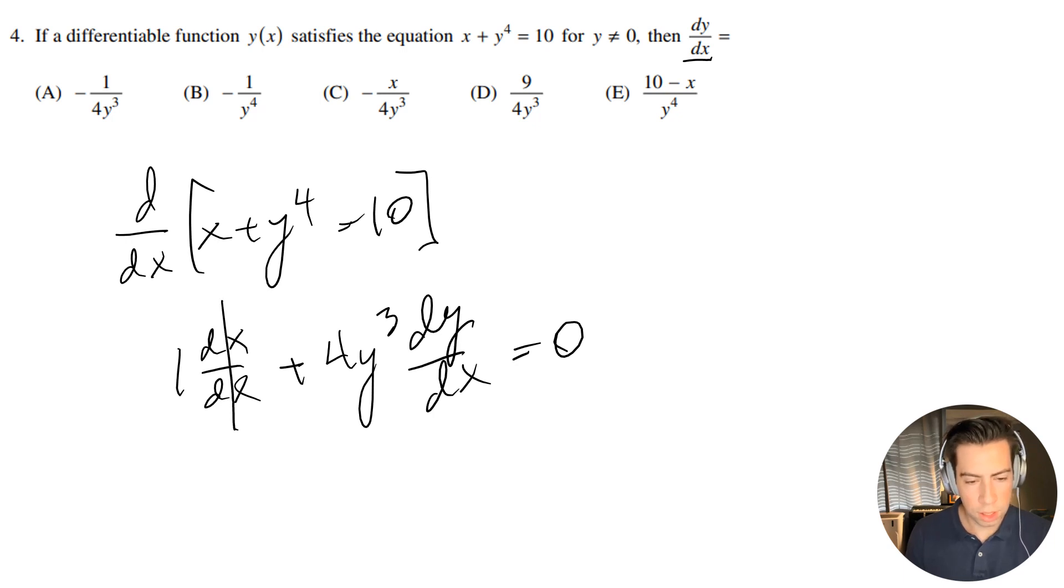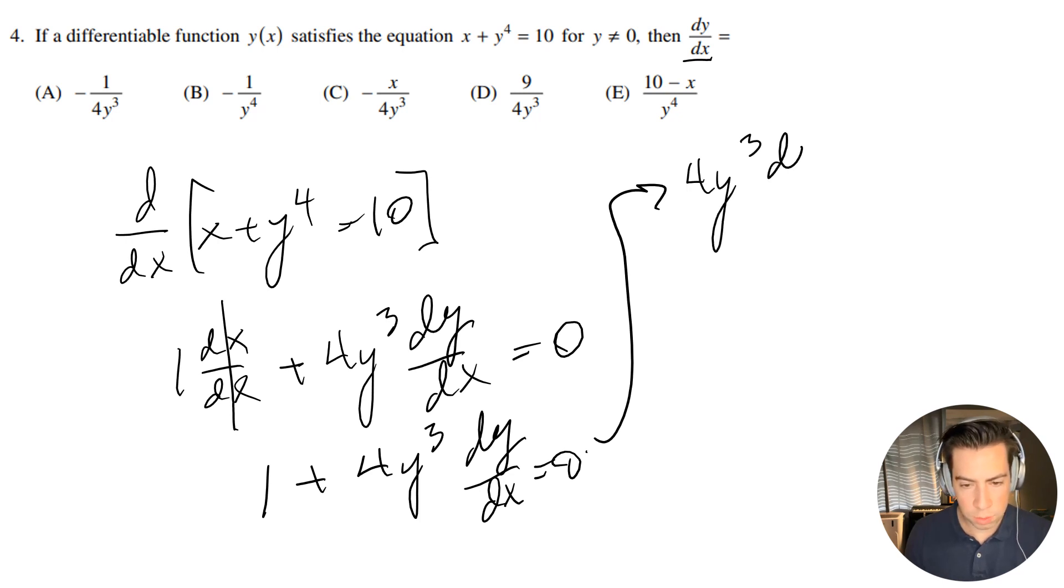Okay, so this is going to simplify down to 1 + 4y^3 dy/dx = 0. And I can subtract 1 from both sides, I will get 4y^3 dy/dx = -1.